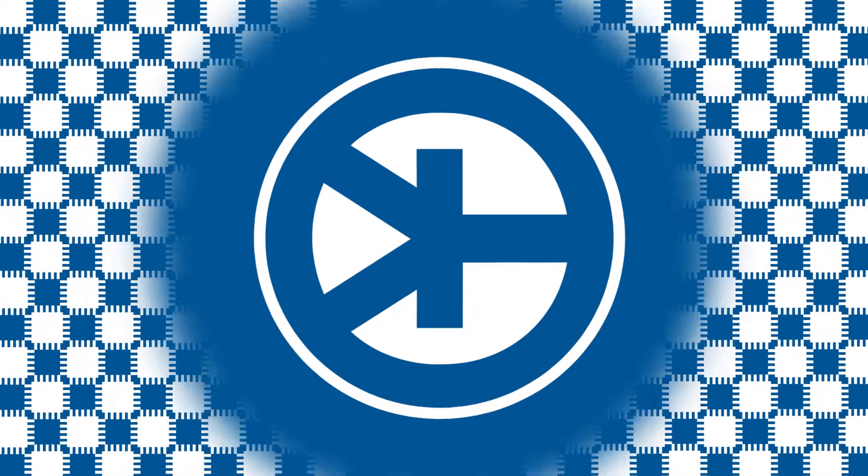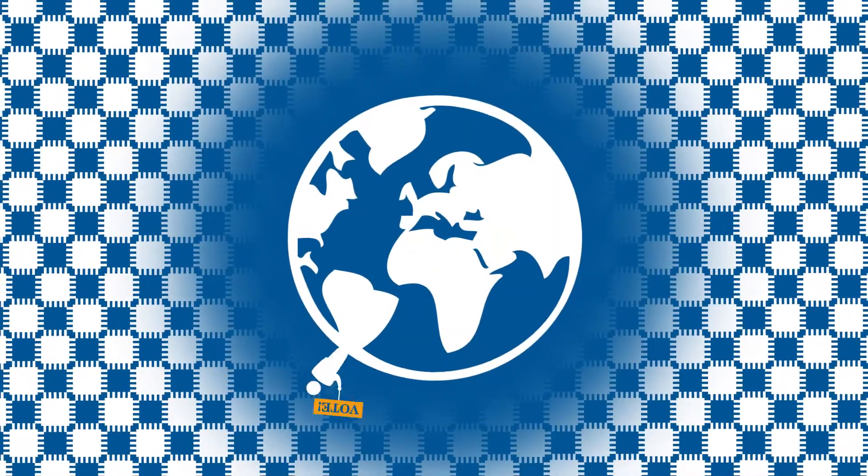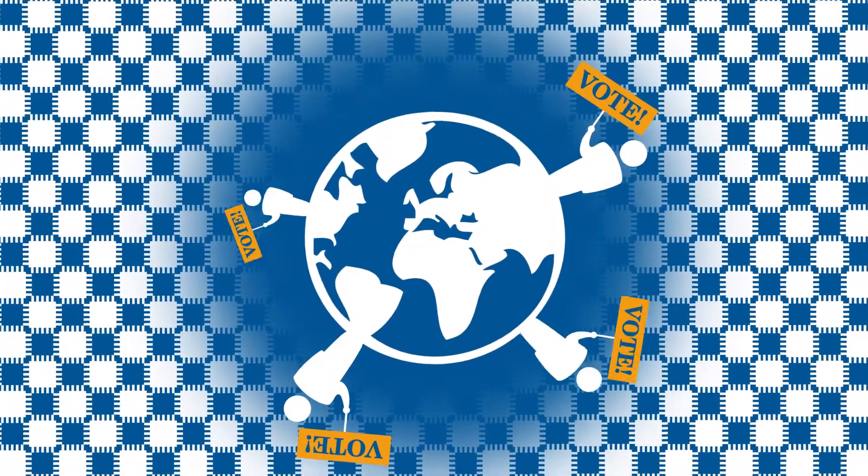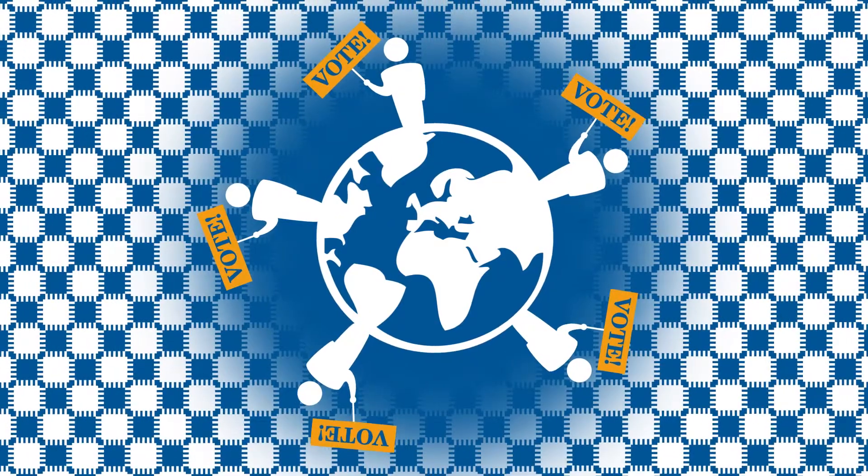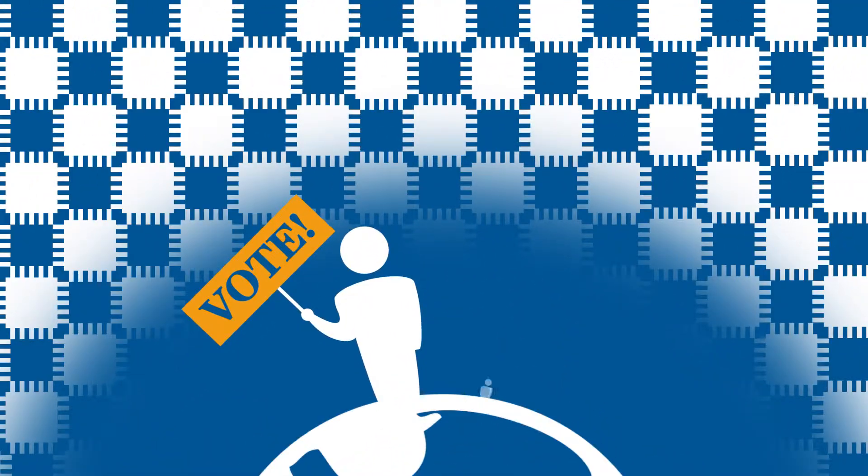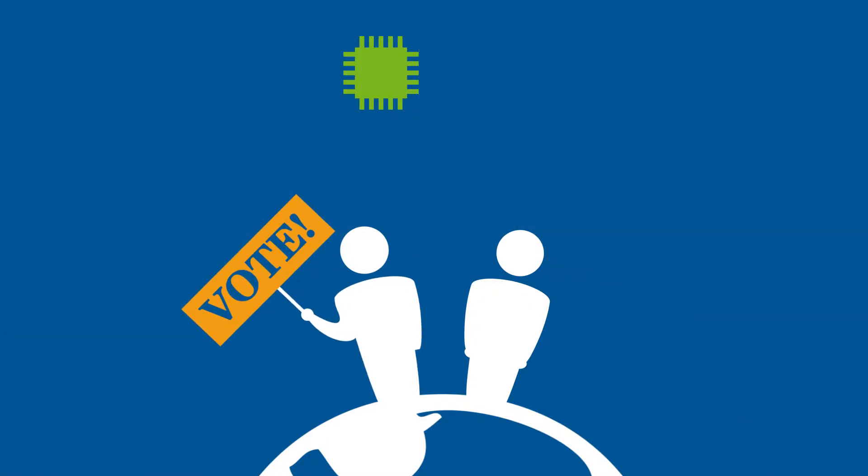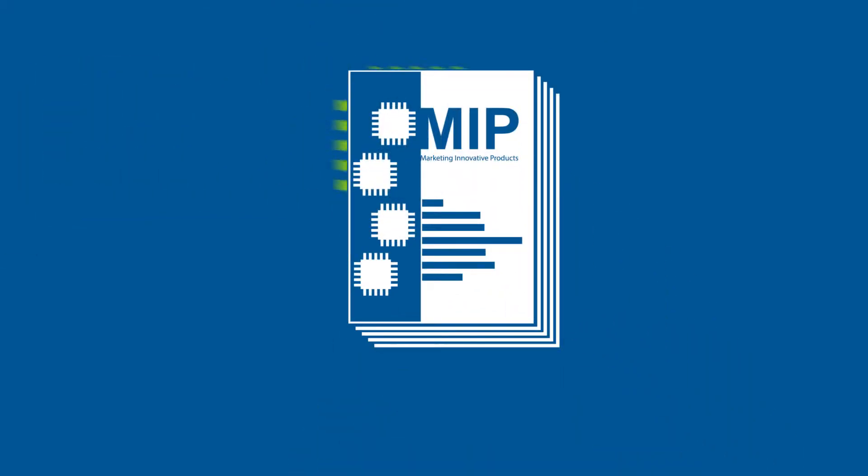EBV has around 50,000 parts in stock. Quarterly, our technical experts vote on the most innovative parts, always having our customers in mind. The top products are carefully selected by our technical experts in cooperation with EBV supplier partners and then collected in the next MIP issue.